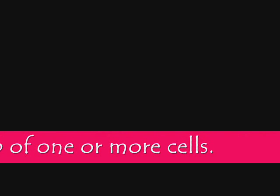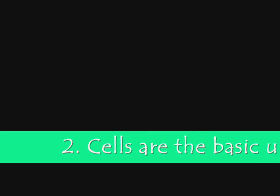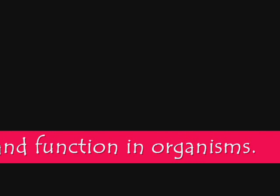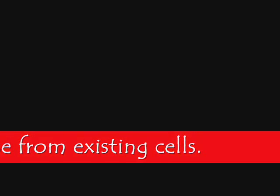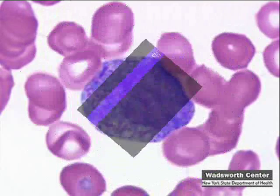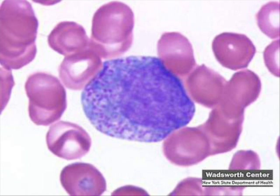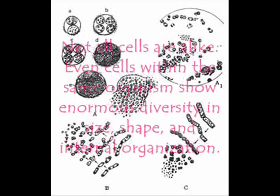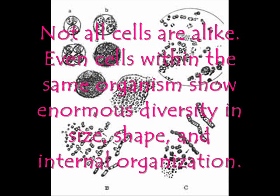All living things are made up of one or more cells. Cells are the basic unit of structure and function in organisms. All cells arise from existing cells. Not all cells are alike — even cells within the same organism show enormous diversity in size, shape, and internal organization.